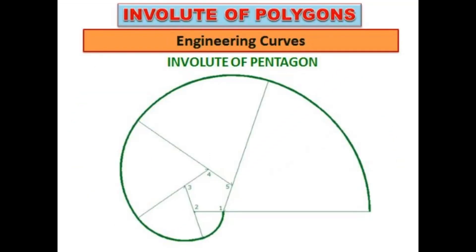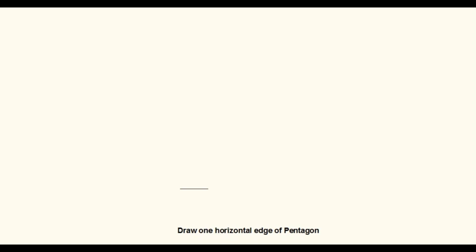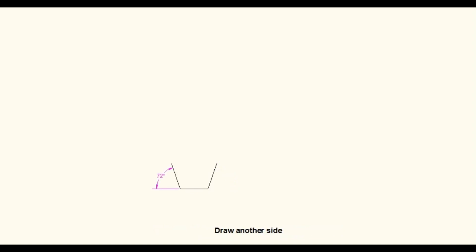Next is the involute of a pentagon. As the first step we have to draw a pentagon. Draw one side horizontally. Draw the next side by taking a 72 degree angle externally. At the other end of the horizontal edge, draw a 72 degree line and mark the side of the pentagon. From the end points of these 72 degree lines, draw arcs of radius equal to the side of the pentagon.